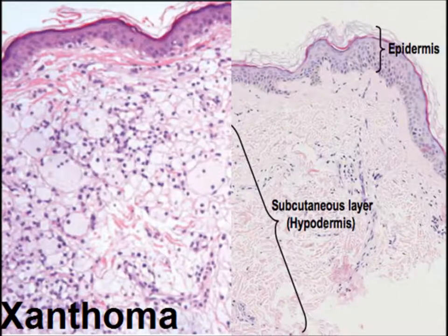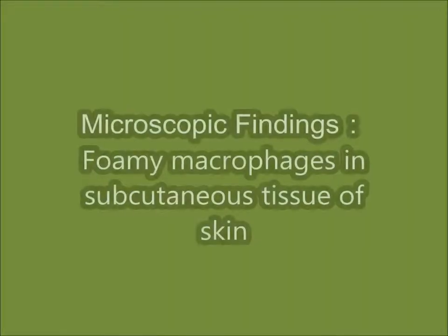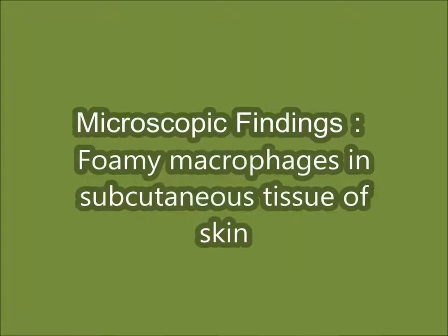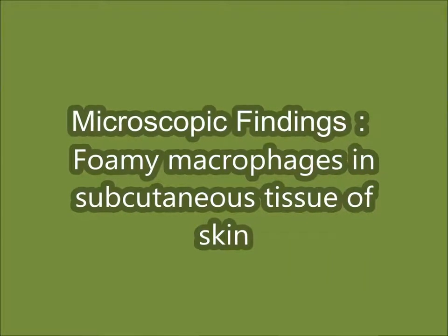This is the comparison — the left side is xanthoma and the right side is normal skin. Normally there are collagen fibers, few inflammatory cells, and blood vessels in the normal skin, with no lipid-laden macrophages. The microscopic findings in xanthoma are foamy macrophages.